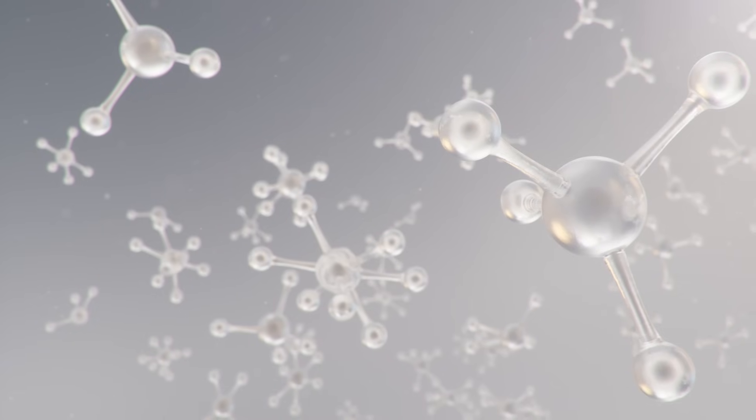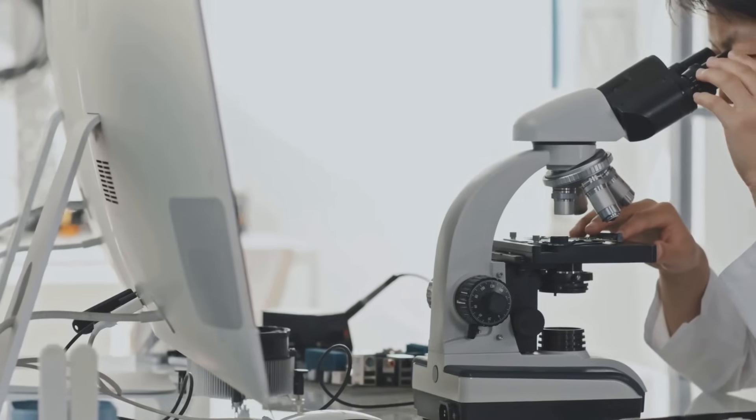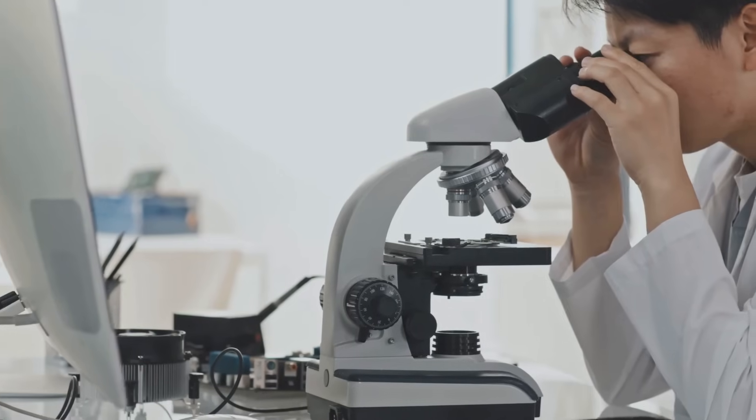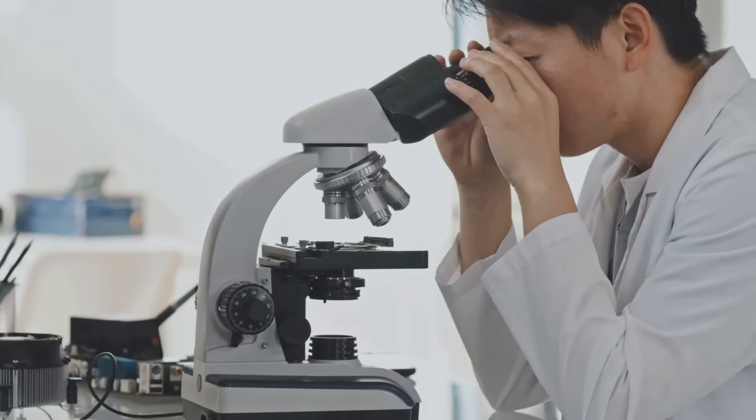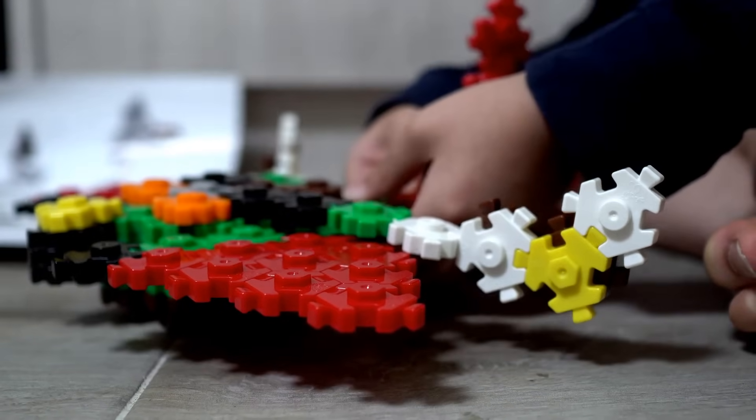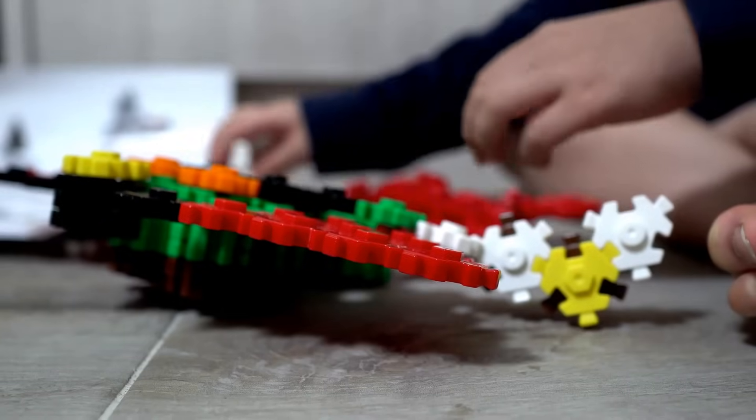Atoms are the teeniest, tiniest building blocks of everything in the entire universe. They are so small that you can't see them with your eyes, not even with a regular microscope. You'd need a very special, very powerful microscope to even get a fuzzy glimpse of one. They are the fundamental ingredients for everything that exists, a bit like tiny, invisible Lego bricks that click together to build the world.